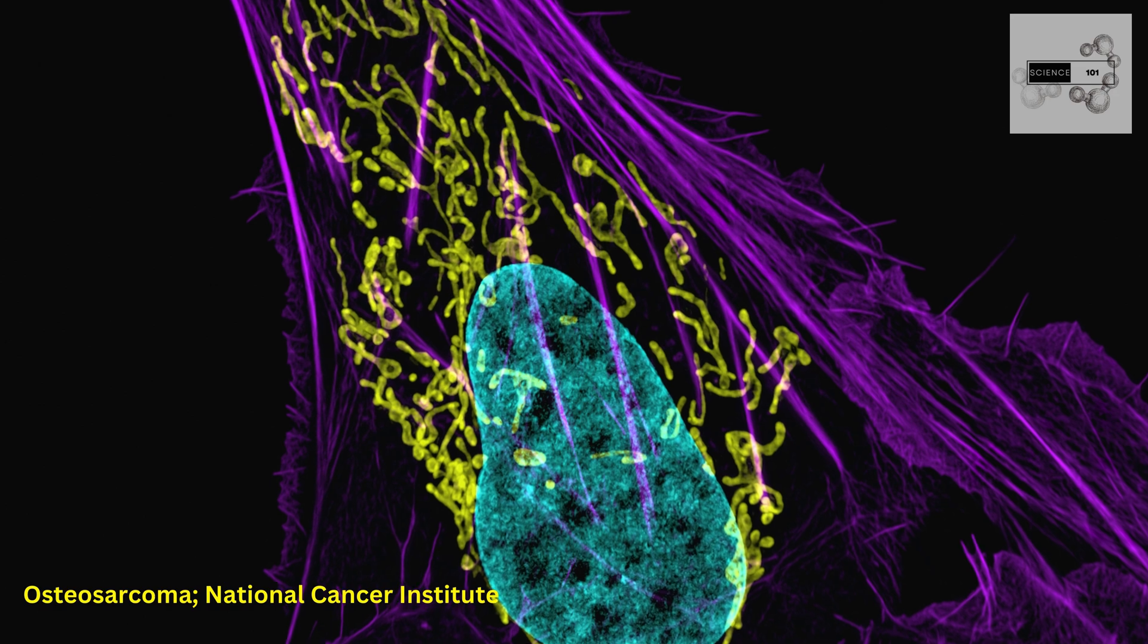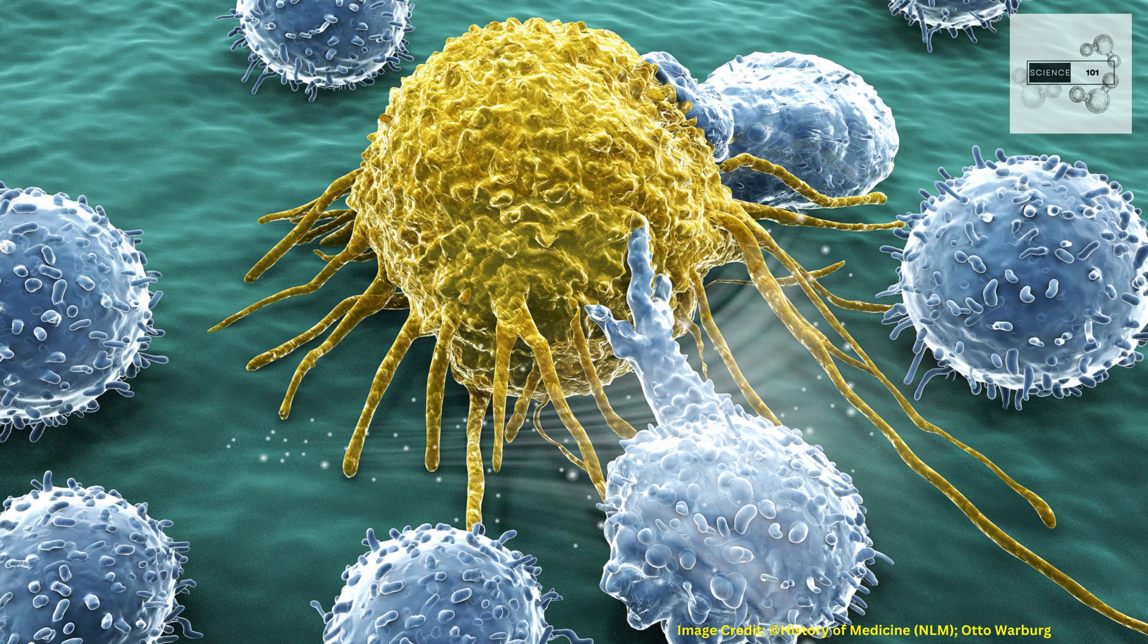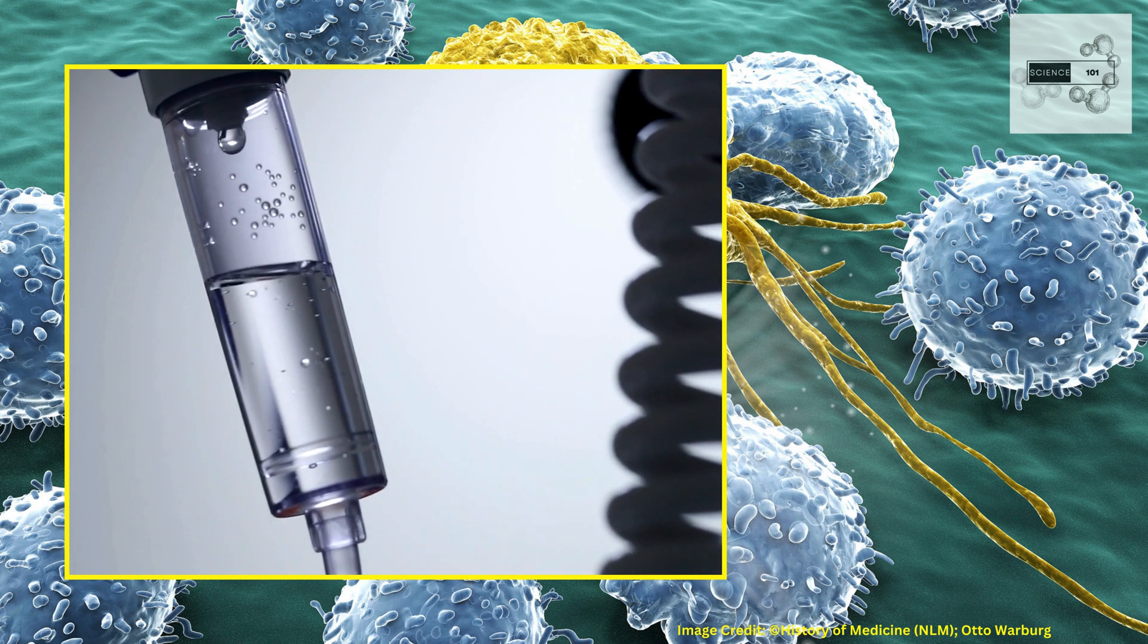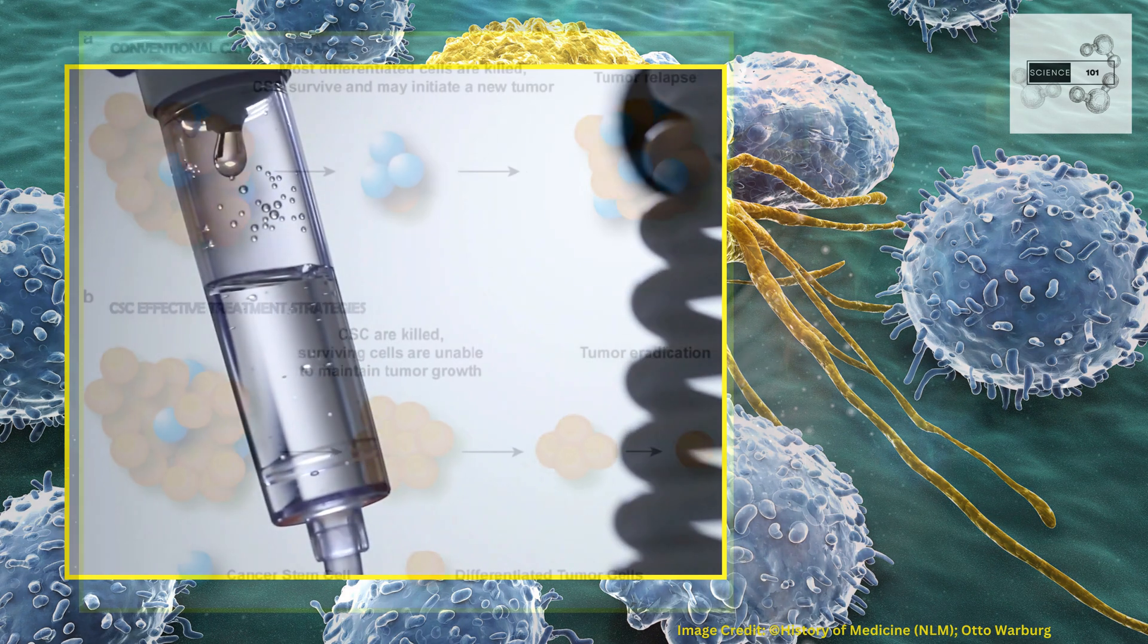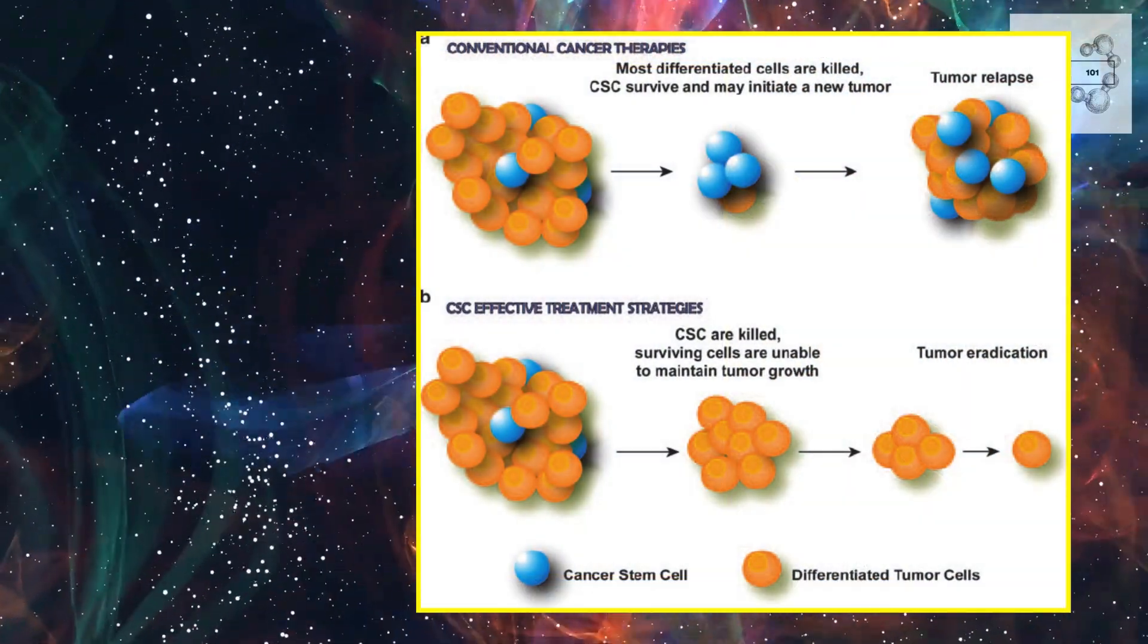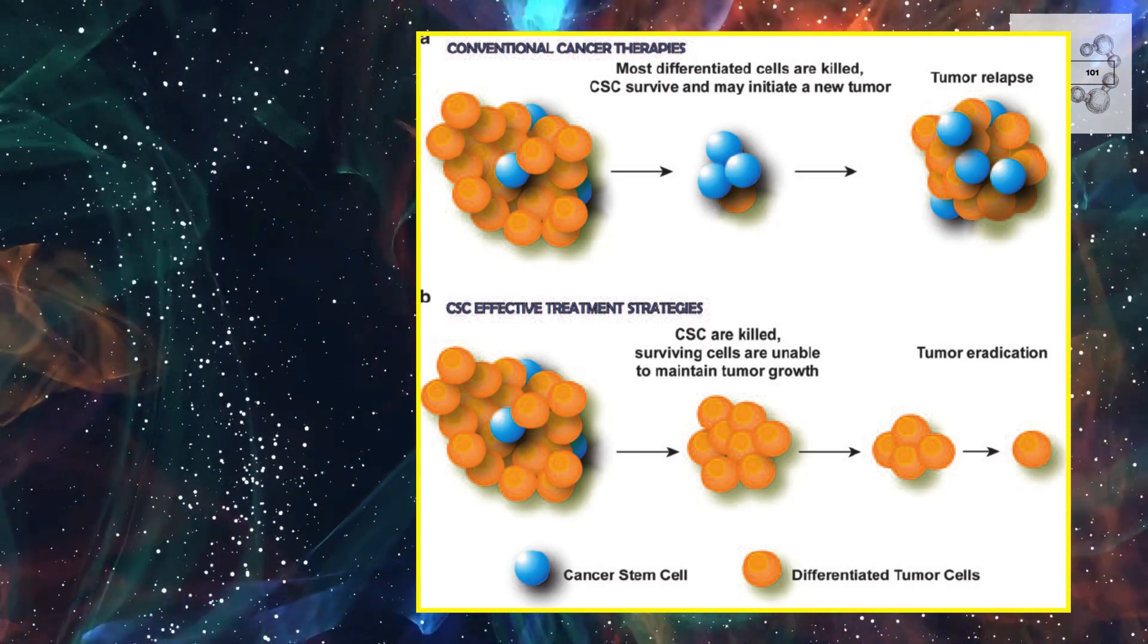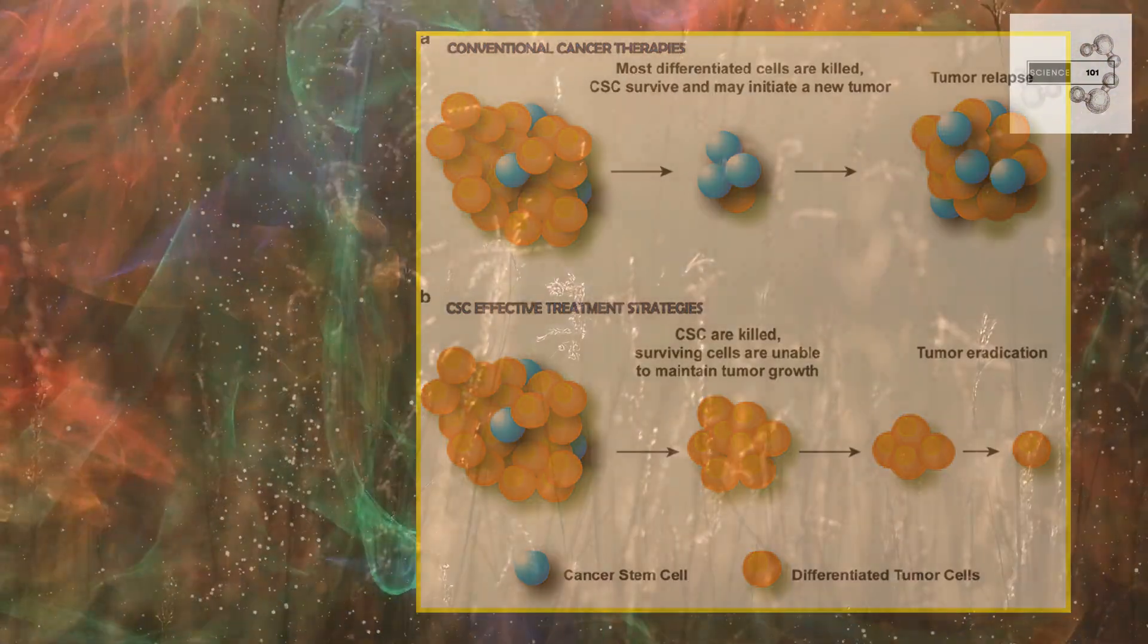This intricate communication between cancer stem cells and the tumor microenvironment poses a significant challenge for cancer therapy. Conventional treatments like chemotherapy and radiation may target the bulk of tumor cells, but they often fail to eliminate cancer stem cells residing within the protected niche. Like resilient weeds amidst a withering garden.